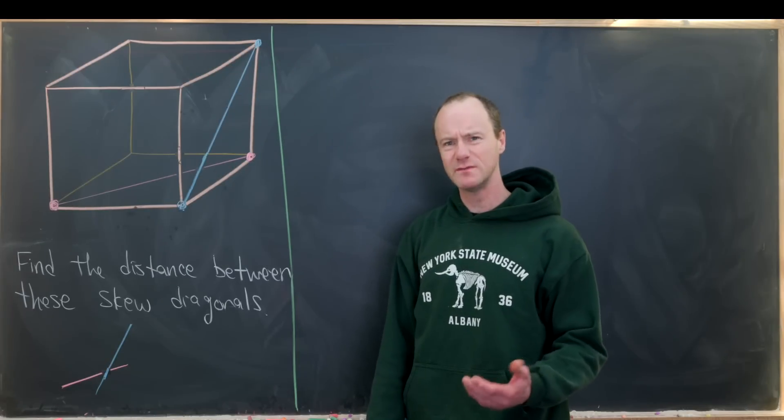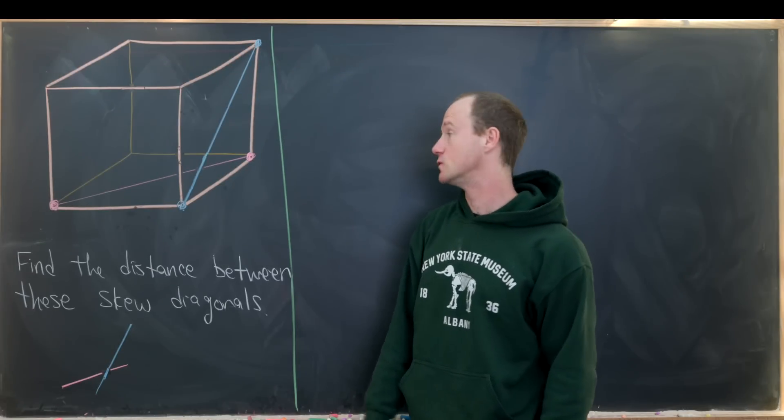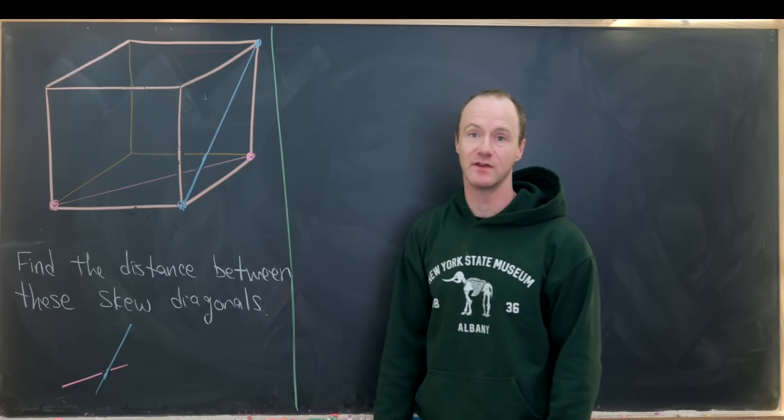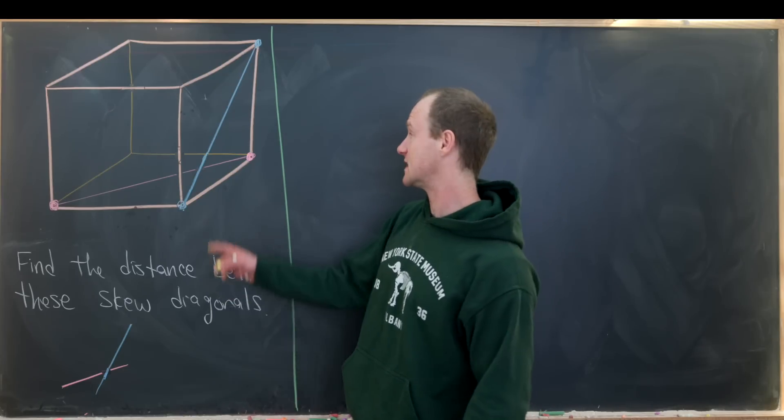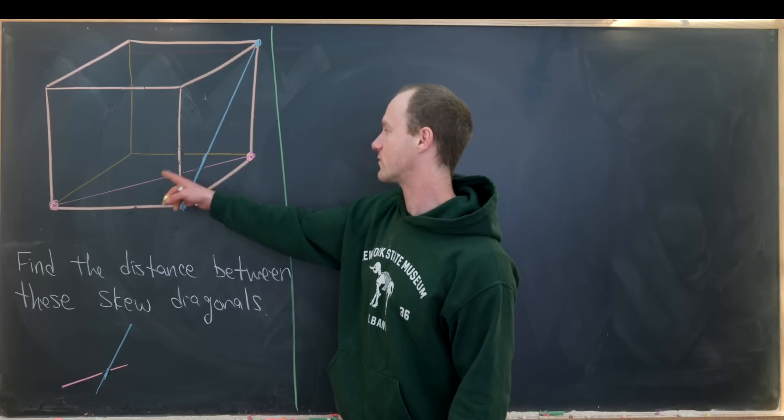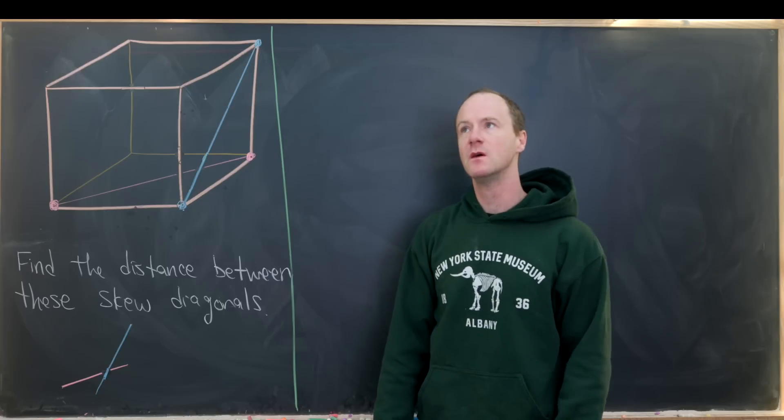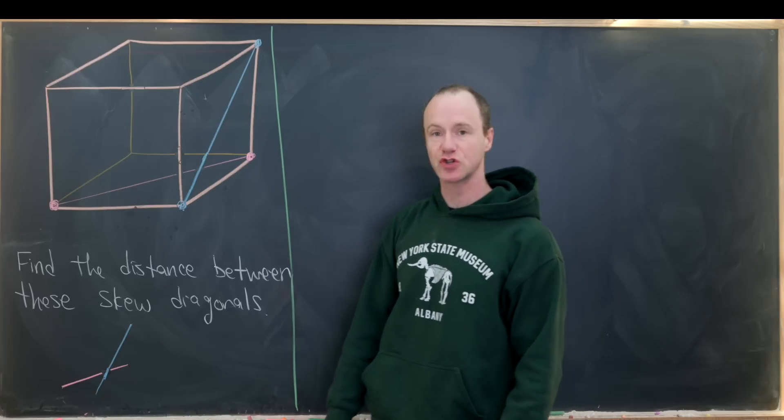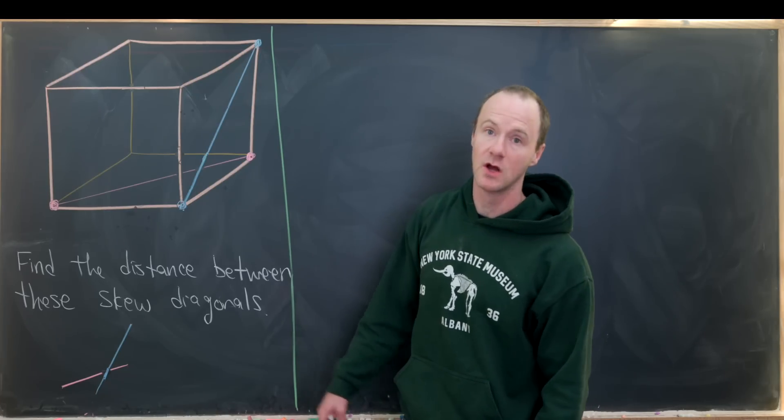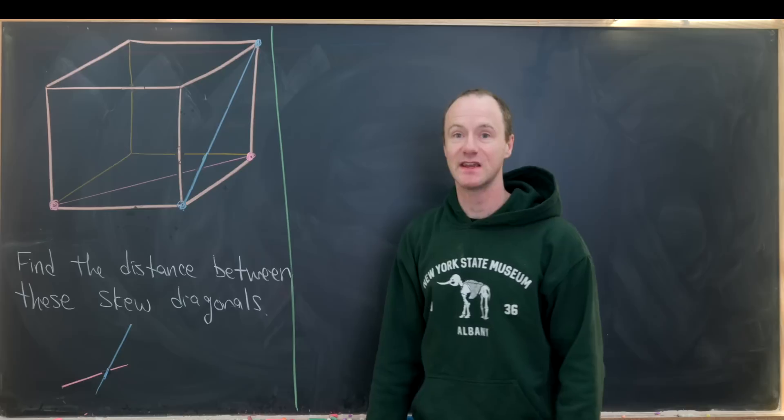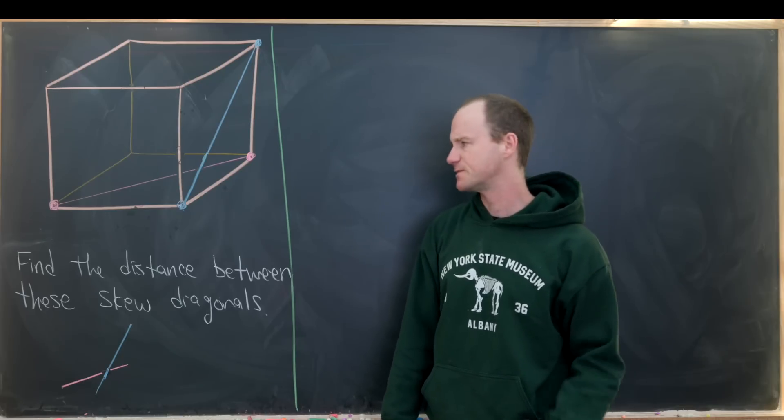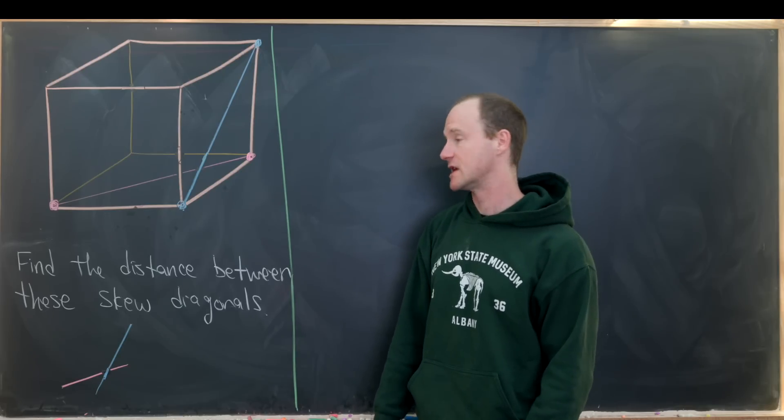So what does it mean to have the distance between two line segments, which is what we have here? Well, that'll be the shortest distance if we measure the distance along every possible point. But the nice thing is that the shortest distance will always occur along a vector or a line which is perpendicular to each of these line segments. So that's the strategy that we'll take here.